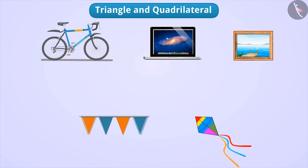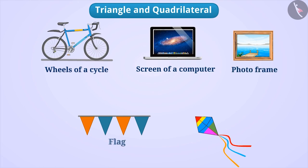We see different types of figures around us. Some of these are wheels of a cycle, the screen of a computer, photo frame, flag, kite and many more.